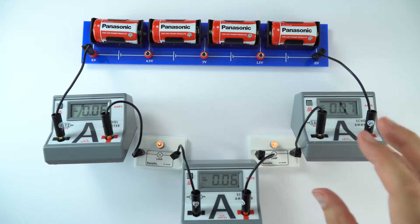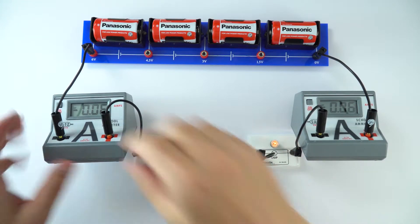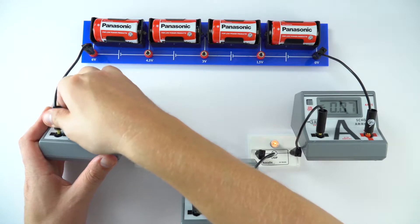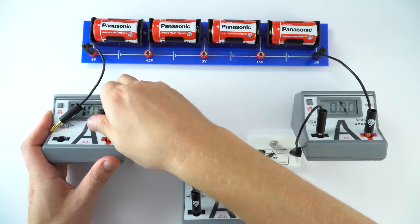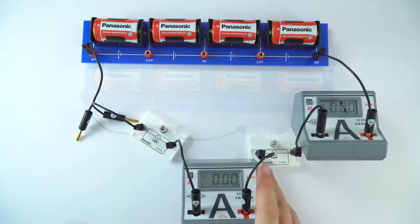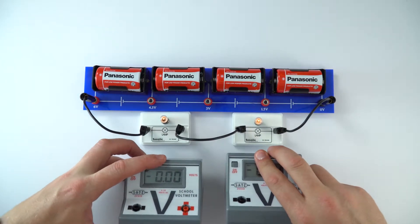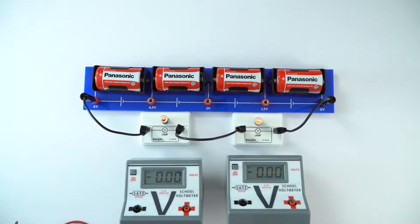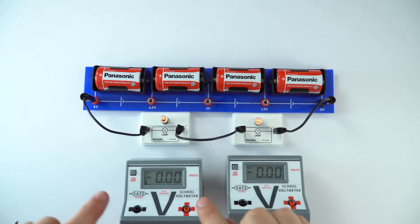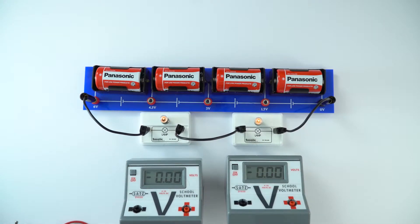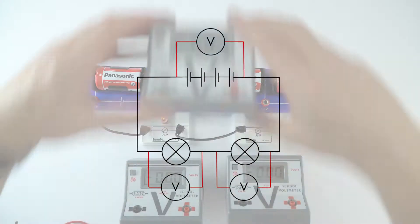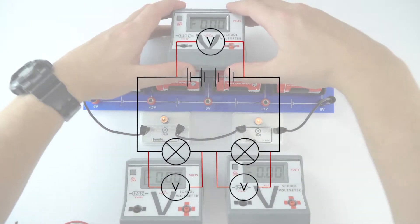We can also investigate the potential difference, and I'm just going to rearrange the circuit and put in some voltmeters for that. So this time I'm going to put a voltmeter across each of my lamps here. So what we're doing is we always attach a voltmeter in parallel.